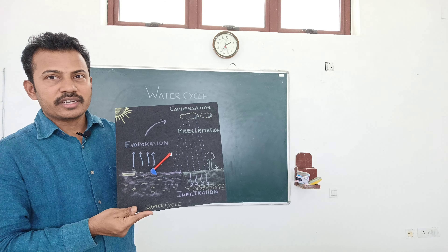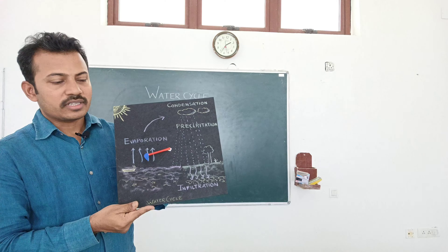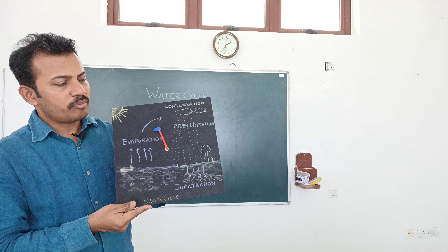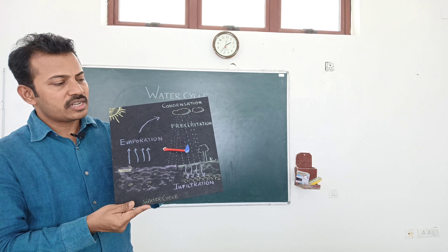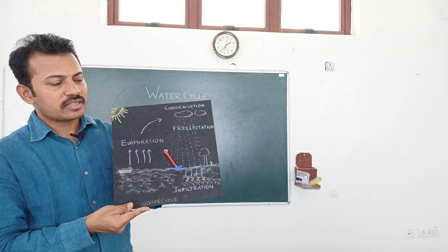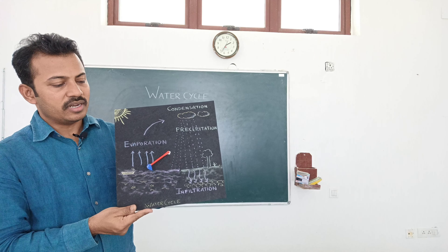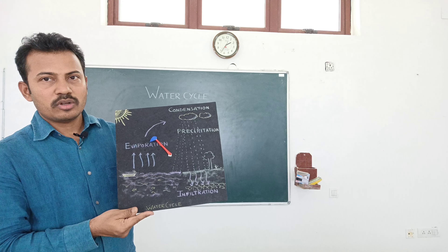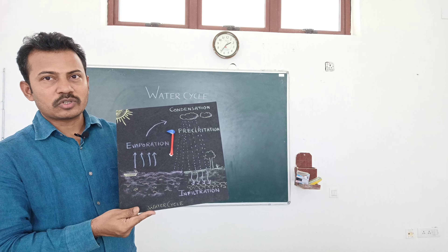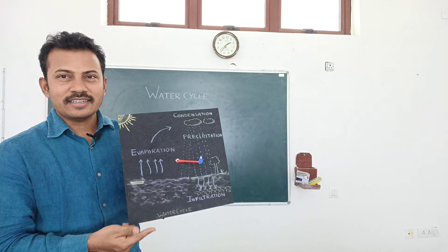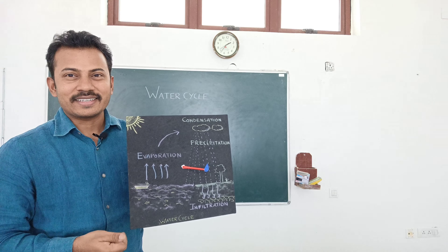That's why we call it a water cycle. This little water droplet is not staying anywhere stable — it keeps on moving. That's why we call it a water cycle.